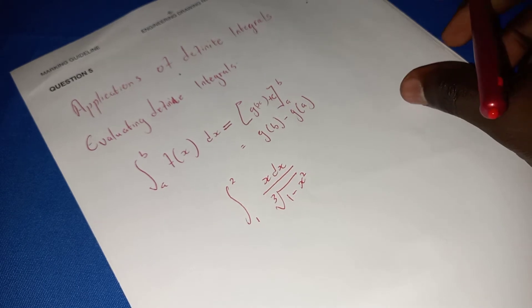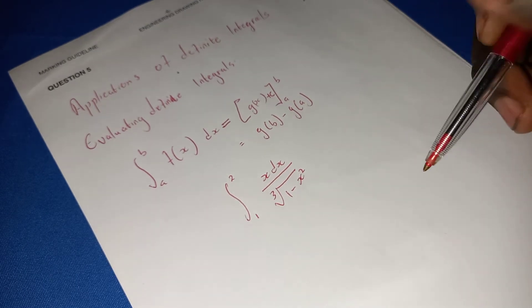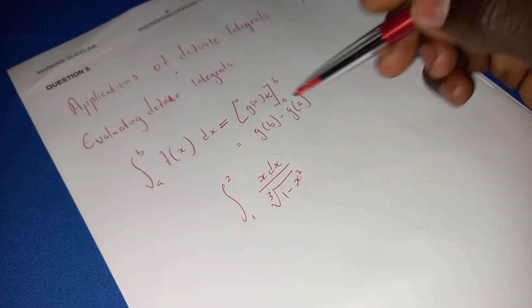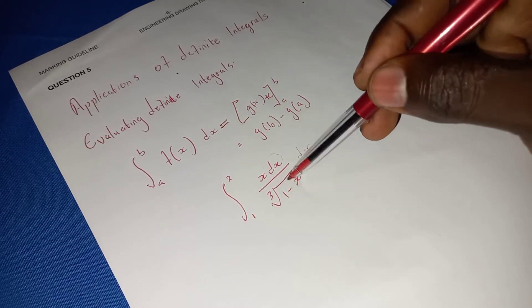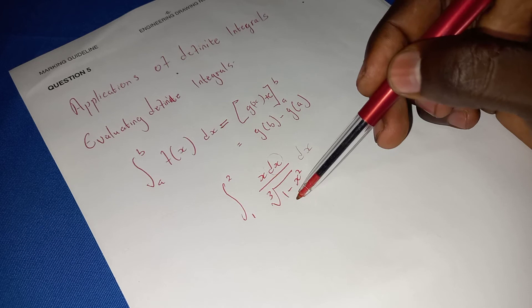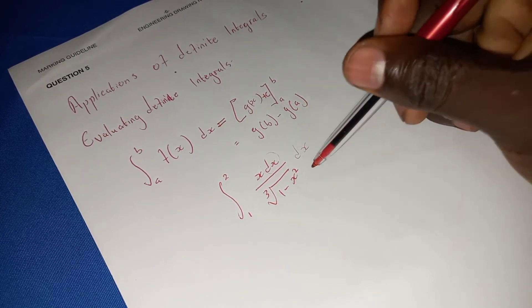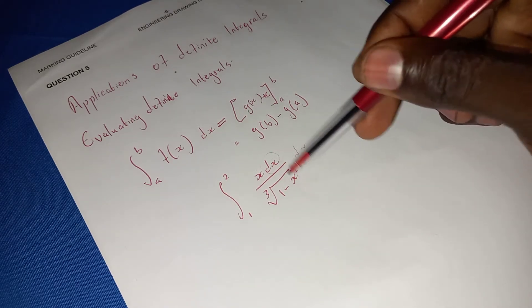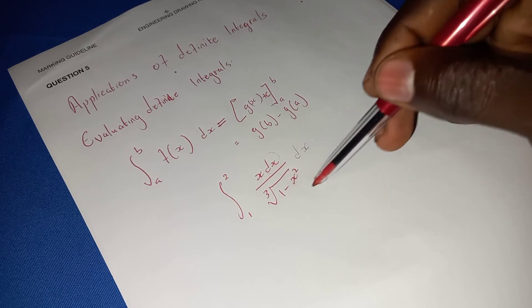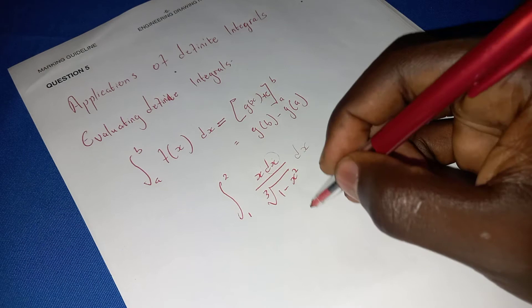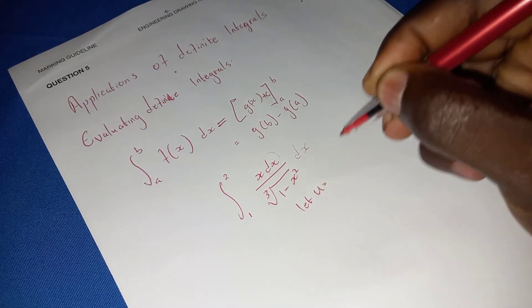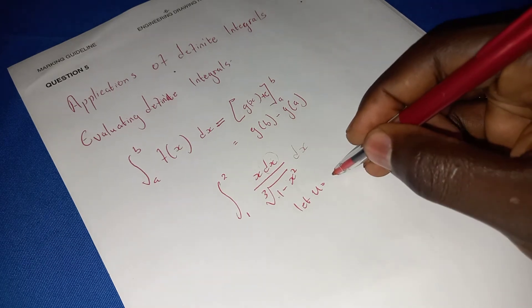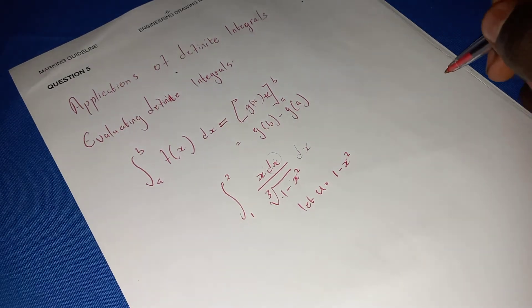You have a sum like this and they say integrate it. You can take dx and move it to the side — it's still the same thing. When you integrate parts like this, you need to separate the numbers. Let u equal everything inside the square root — that is, u = 1 minus x squared.